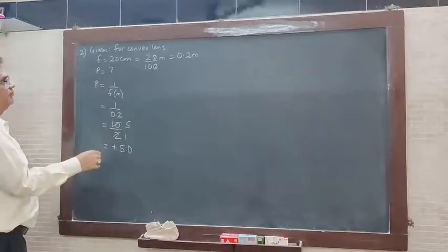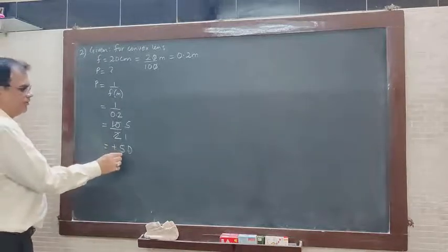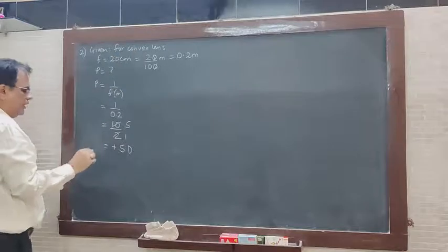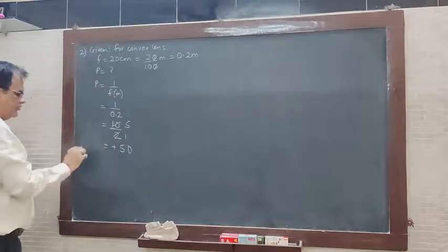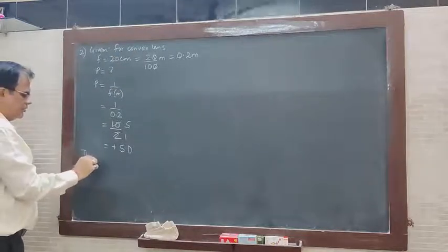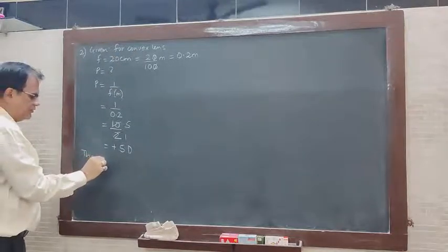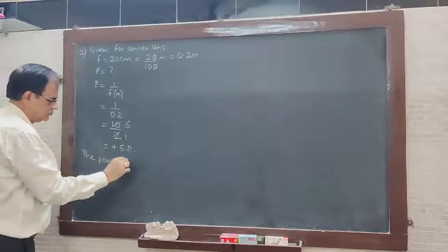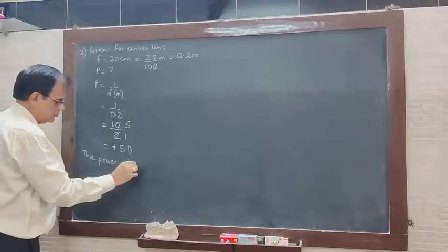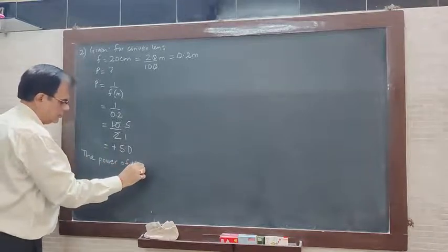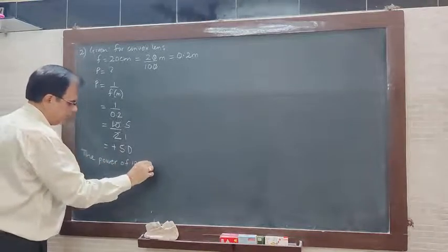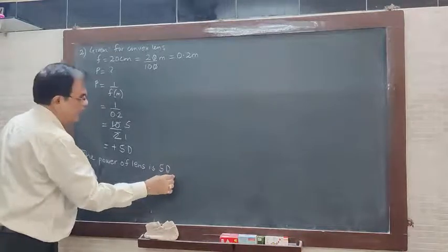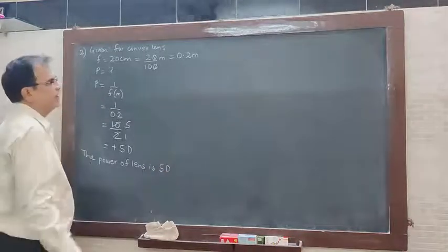Plus 5 indicates it is a convex lens. A positive answer indicates it is a convex lens. So the answer is: the power of the lens is 5 diopters.